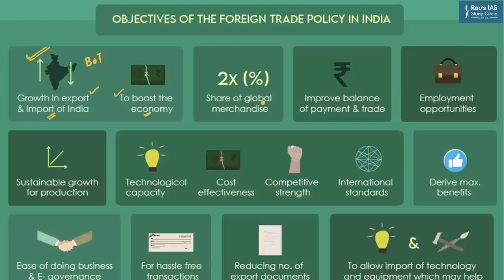Then comes the target of 2x share in global merchandise. India has always been looking to double its global merchandise share — 2x means doubling every time, so if it is 2% now, the target is 4% next, then 8% after that. The government is also looking to improve the balance of payment. Another objective is to create employment opportunities, as the export sector has great potential for employment generation. It also brings sustainable growth for the production sector, because things not consumed domestically can be exported to countries where demand is high.